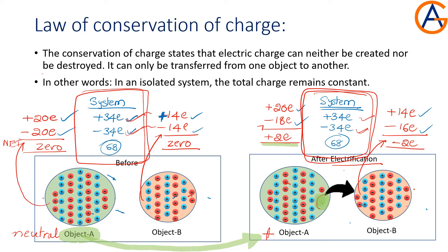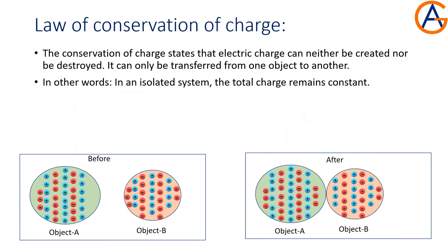So our conclusion is: we cannot create the charge, we cannot destroy the charge. We can only transfer the charge from one object to another object in an isolated system — that is, the total charge remains constant. Let's observe the similar thing in another example.